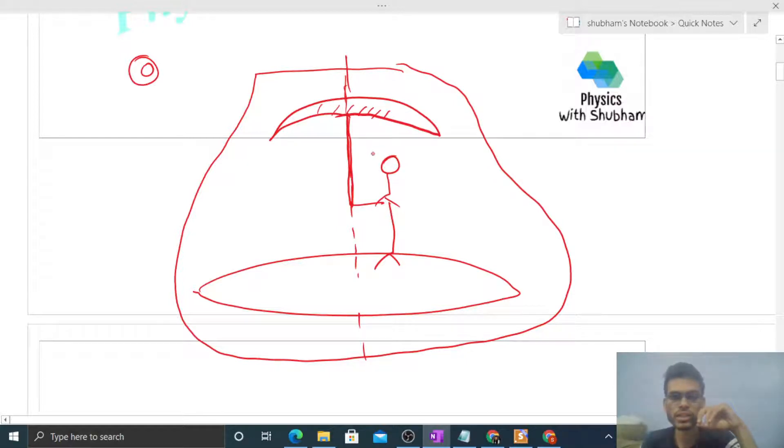The torque applied by the boy on the umbrella will be an internal torque for the system because this boy and umbrella both are part of the system. There will be equal and opposite torque applied by the boy on the umbrella and the umbrella on the boy. Is there any external torque acting on the system? No, there is no external torque acting on the system. So we can say net external torque acting on the system is zero, so we can conserve the angular momentum of the system. Initial angular momentum was zero, so final angular momentum will also be zero.